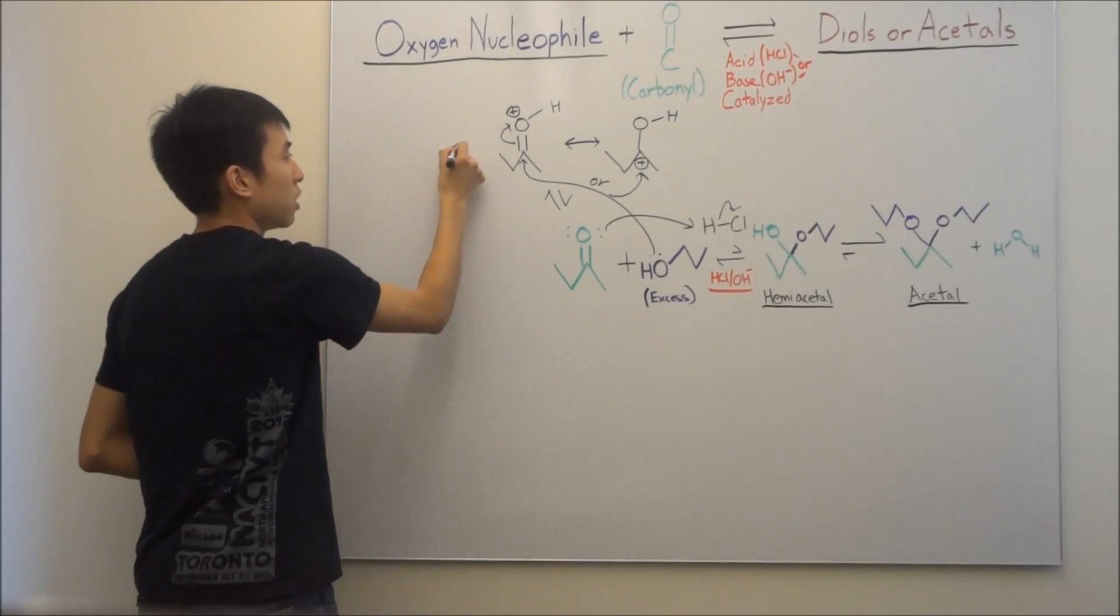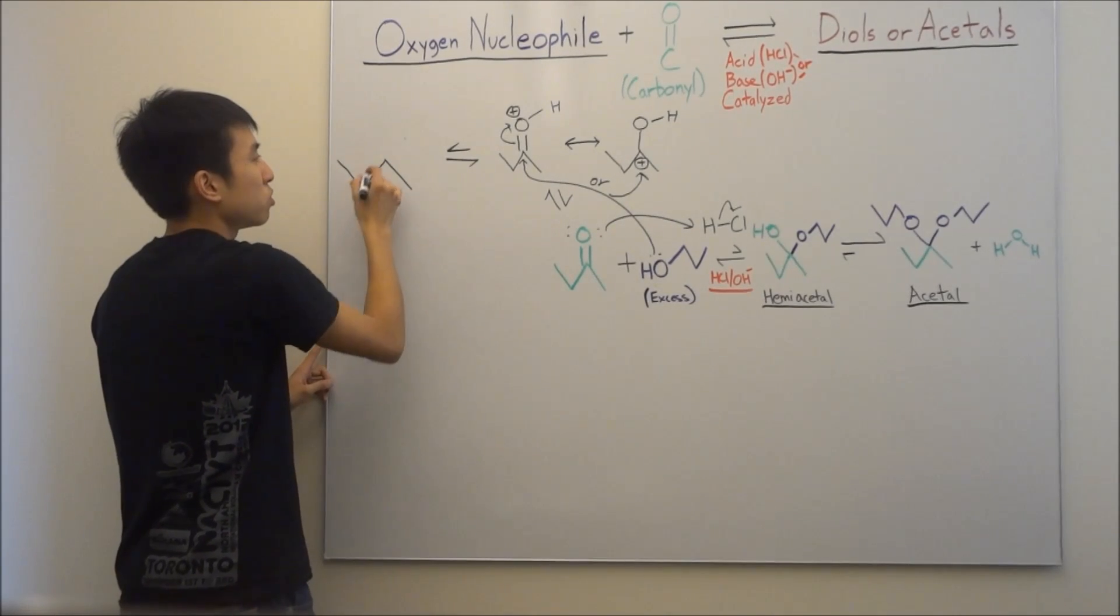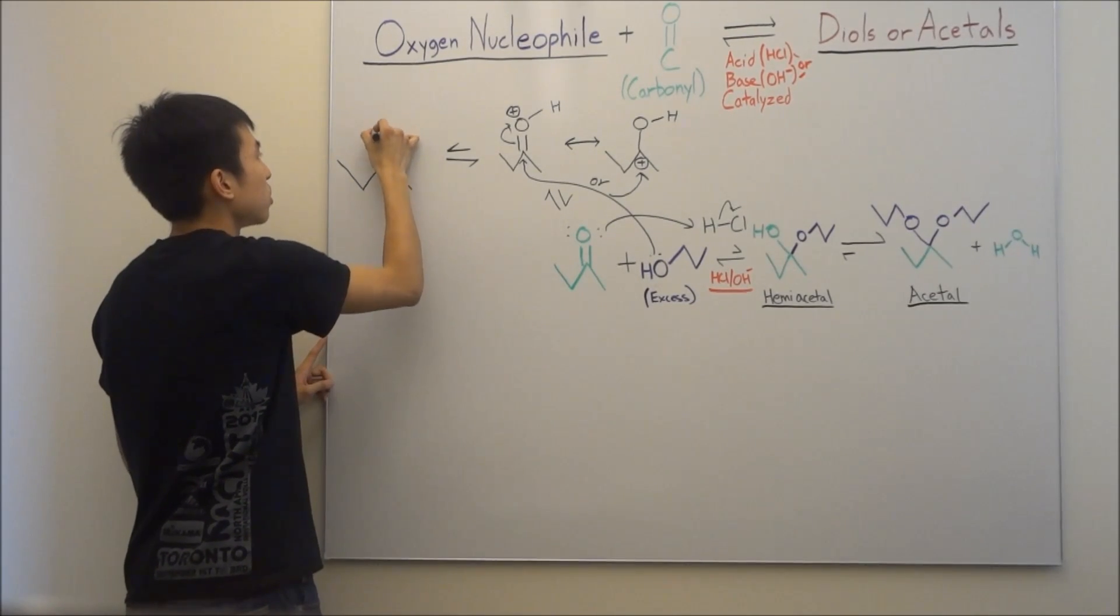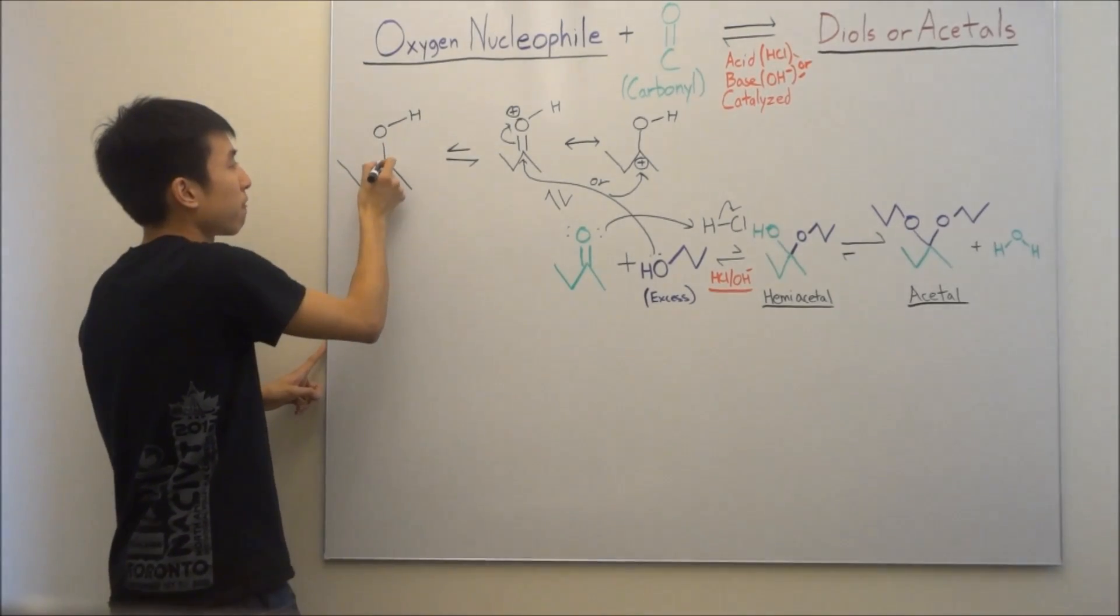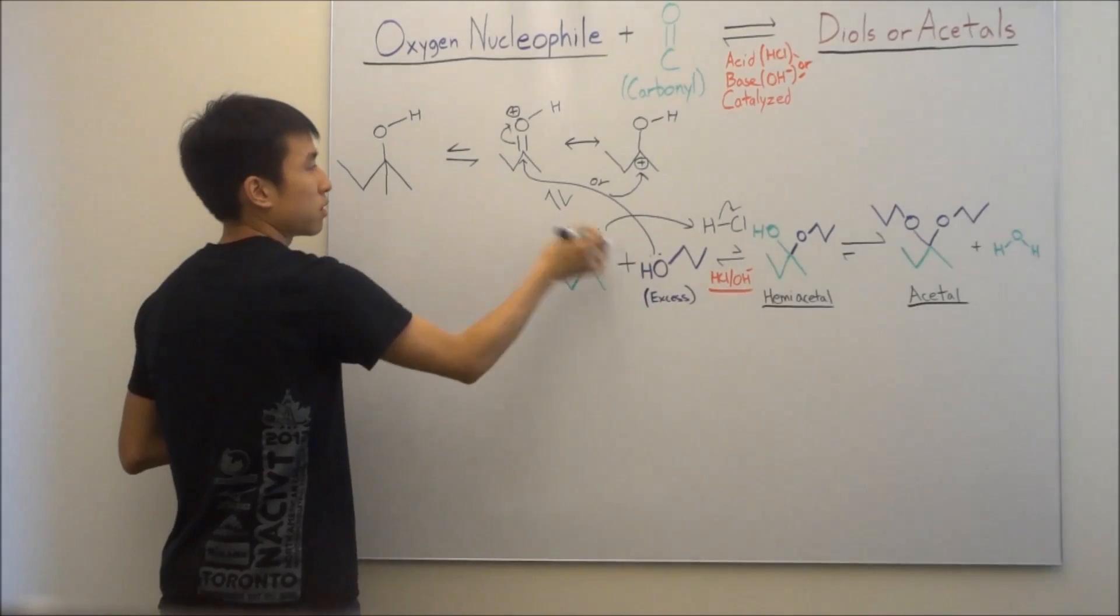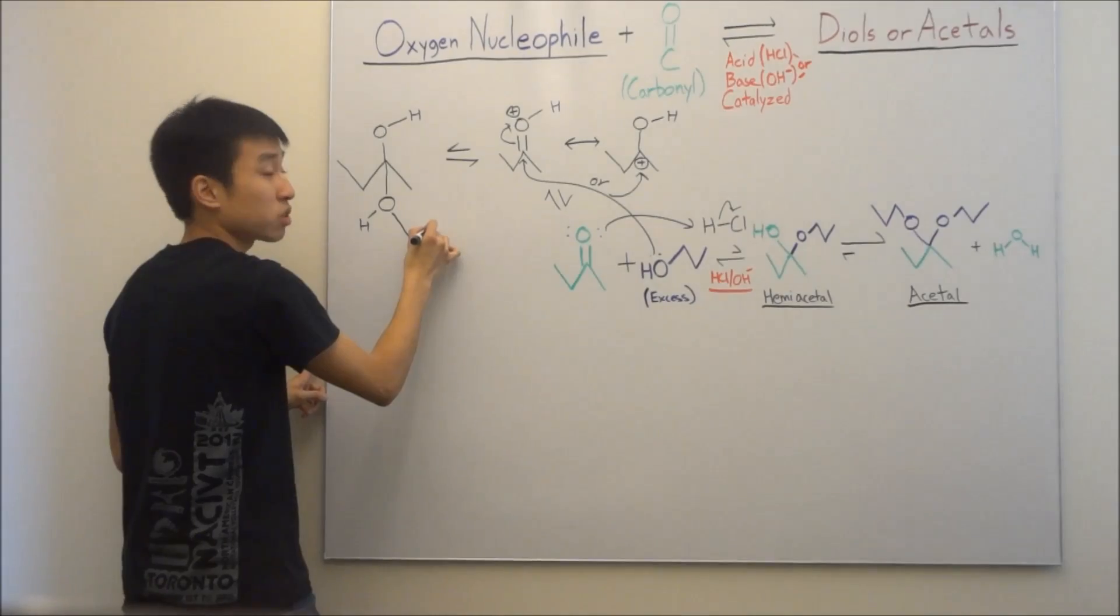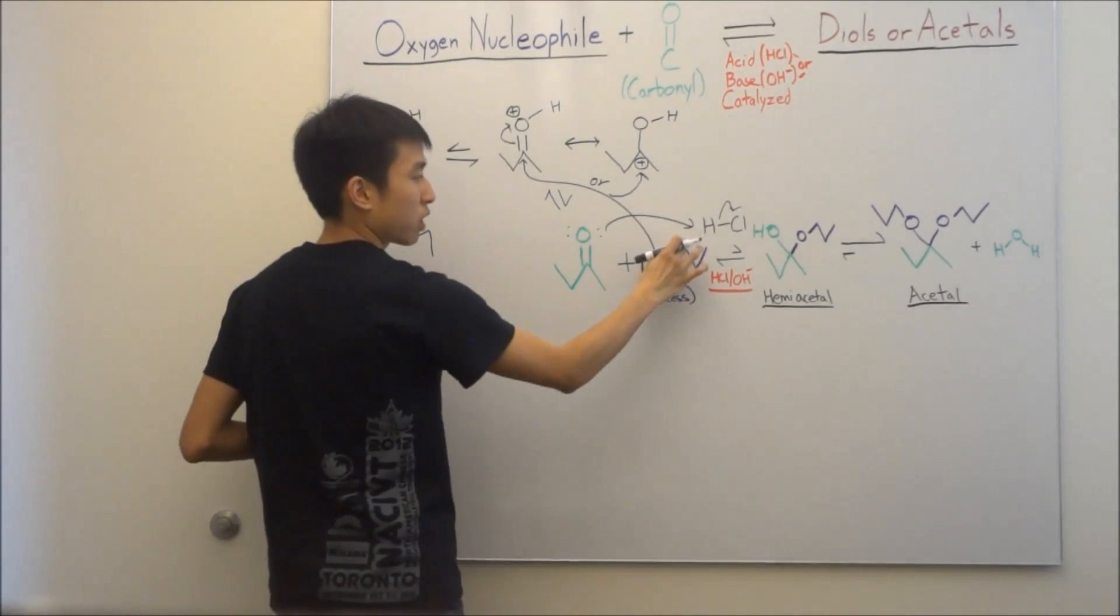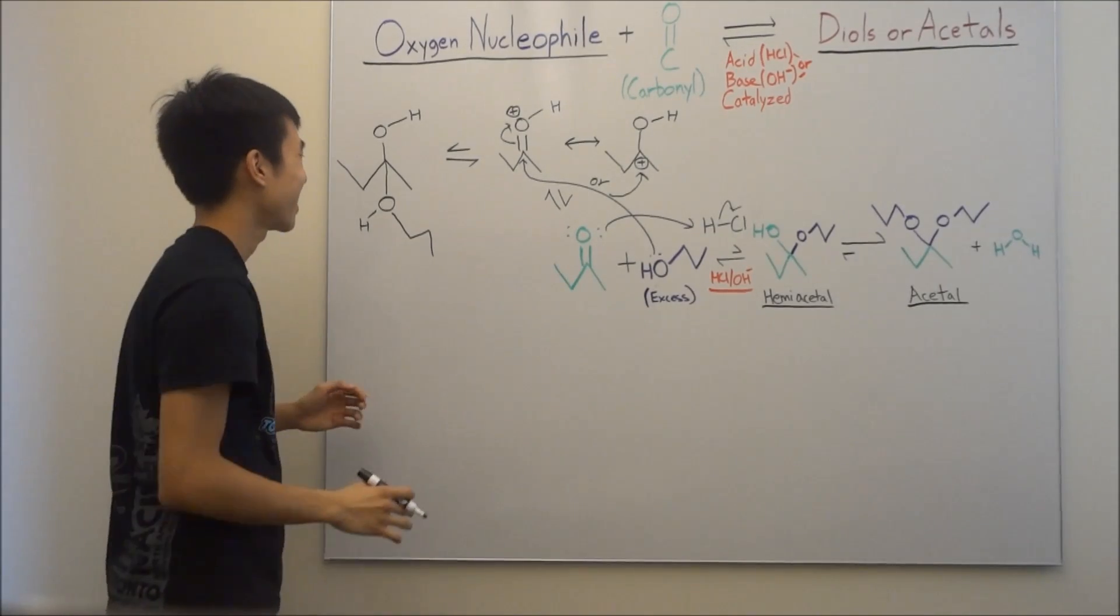Now what you're going to get is this product. A nice neutral alcohol group, and then because this alcohol is attacking, he's going to be attached down here. Make sure you don't lose any carbons. So one carbon, two carbon, three carbon. One carbon, two carbon, three carbons.